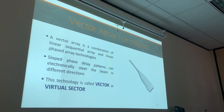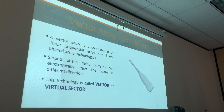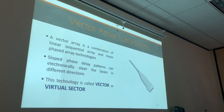So, Vector Array Transducer is a combination of the Linear Sequential Array Transducer and the Linear Phase Array Transducer. That's what I want you all to remember about the Vector Array — it's a combination of both. Slope, fade, and delay patterns can electronically steer the beam. Remember our two S's: slope equals steer. The technology is called Vector or Virtual Sector — vector is just the word 'virtual' and 'sector' together, like how 'picture element' becomes 'pixel.'